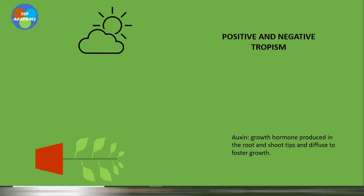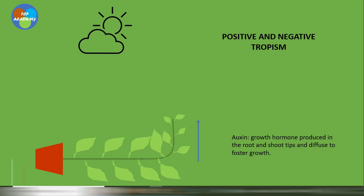Here we have an example: this plant on its side has grown upward while the root grows downward. This is because an accumulation of auxin on the lower side of the stem causes cells there to elongate and grow much faster than those on the upper side, hence the plant turning upward. In the root, auxin accumulates on the lower side but inhibits cell growth there, causing the root to turn downward towards the soil.